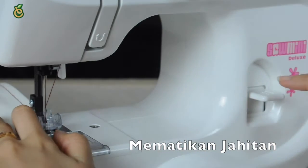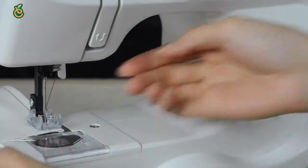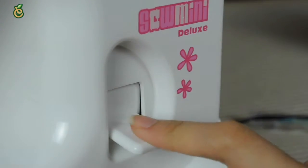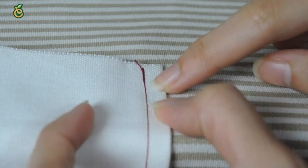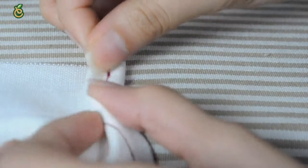Finishing sewing: To fasten the end of a seam, press the reverse stitch control and sew several stitches. Raise the presser foot, remove the fabric, and cut off the threads.